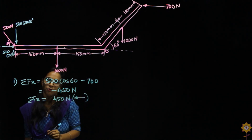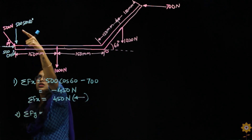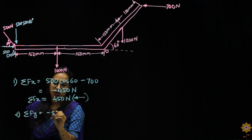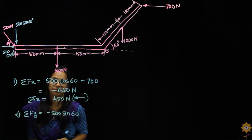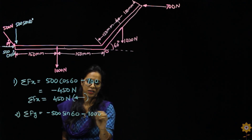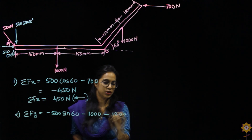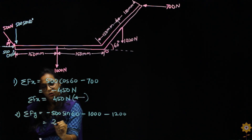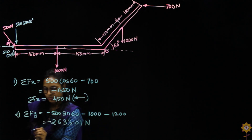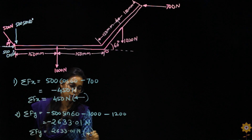The next step is to find the summation of Fy — all forces in the y-direction. The force 500 sin 60 is going downward, so it's negative. Then we have 1000 newtons also going downward, and 1200 newtons also going vertically downward. Calculating all three gives summation of Fy equal to negative 2633.01 newtons, or 2633.01 newtons in the downward direction.